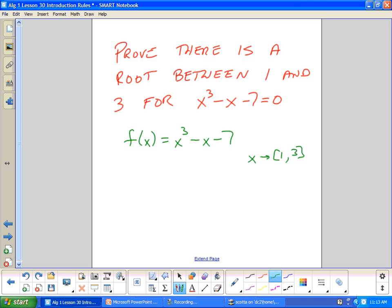Now you don't have to have a graph, but if we think about a graph of this problem, I plug in 1, I get negative 7. f of 1 is negative 7. And f of 3, 27 minus 10 is 17.